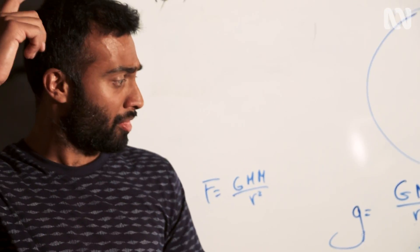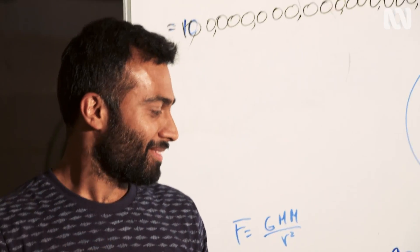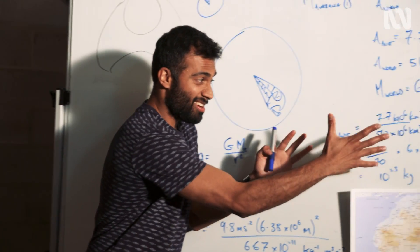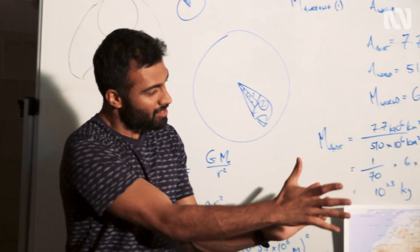And the radius of the earth? 6,380 kilometres roughly. Awesome. And big G? Universal gravitation constant 6.67 by 10 to the minus 11.